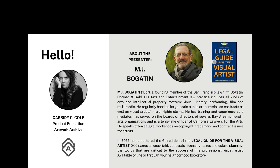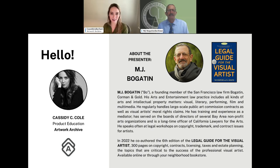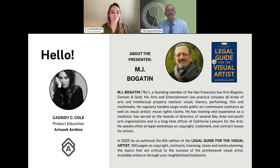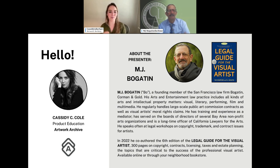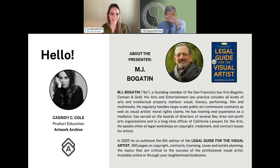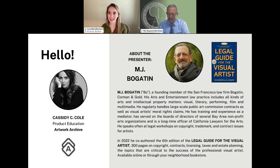I have M.J. Bogotten with us — everyone knows him as Bo. He's a founding member of the San Francisco law firm Bogotten, Corman & Gold. His arts and entertainment law practice includes all kinds of arts and intellectual property matters: visual, literary, performing, film, multimedia. He regularly handles large-scale public art commission contracts as well as visual artists' moral rights claims. He has training and experience as a mediator, has served on boards of directors of several Bay Area nonprofit arts organizations, and is a longtime officer of California Lawyers for the Arts. He speaks often at legal workshops on copyright, trademark, and contract issues for artists.